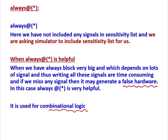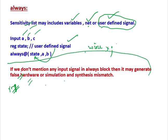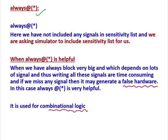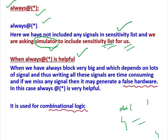So the solution for this problem is the concept called always @(*). Always @(*) means we have not included any signals in the sensitivity list manually. Instead, we are asking the simulator itself to include the sensitivity list for us. We are asking the simulator to automatically include the input signals. This is helpful when we have a very large always block — let's say 100, 200, or 1000 lines.